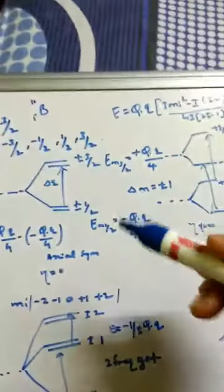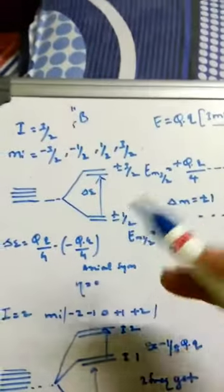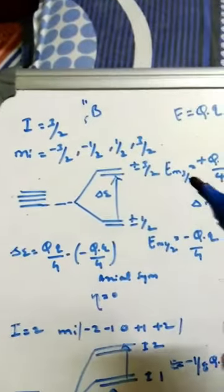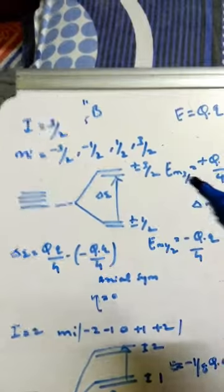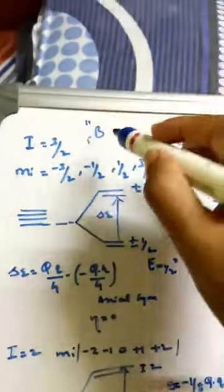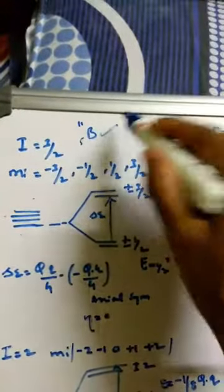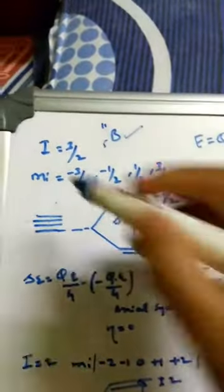Hello students, we will go for the next video of NQR — nuclear quadrupole resonance. In the last video we learned the splitting for I equal to 1, so today we will go for boron, whose I value is 3/2.